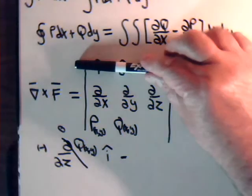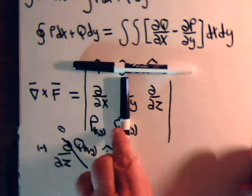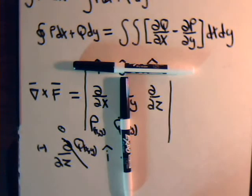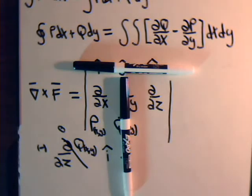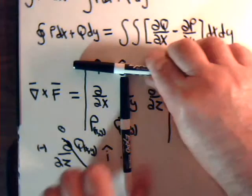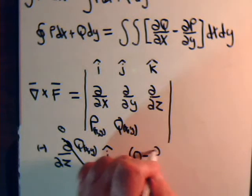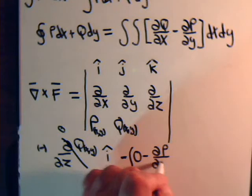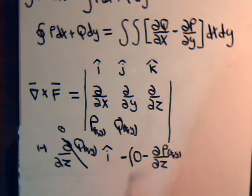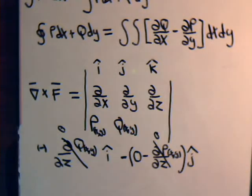For the j component, we cover up the first row and middle column to get a 2×2 sub-determinant. This gives zero minus the partial of p with respect to z. But p is also only a function of x and y, so that partial derivative with respect to z is zero as well. Therefore the j component of the curl is also zero. Our curl of f has no i or j component.